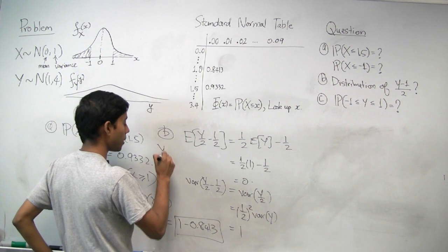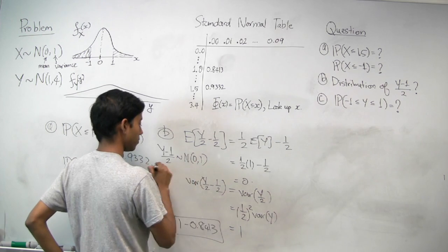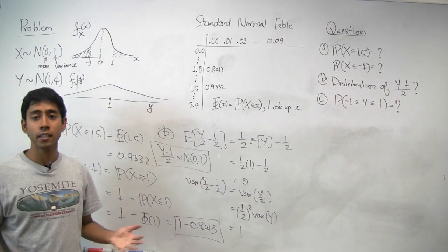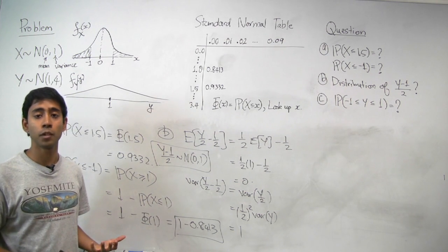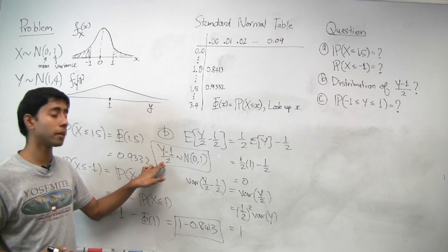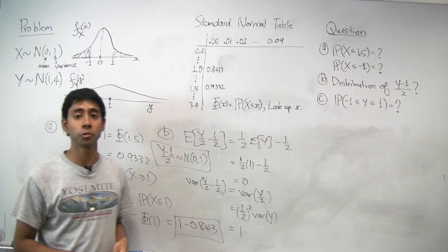So now we know that Y minus 1 over 2 is actually standard normal. Actually, for any normal random variable, you can follow the same procedure. You just subtract its mean, which is 1 in this case, and divide by its standard deviation, and you'll get a standard normal distribution.